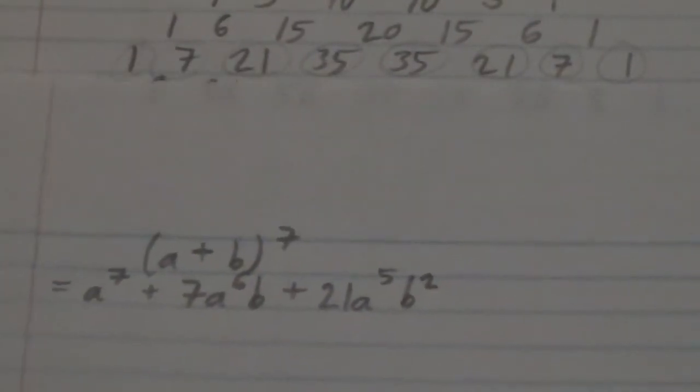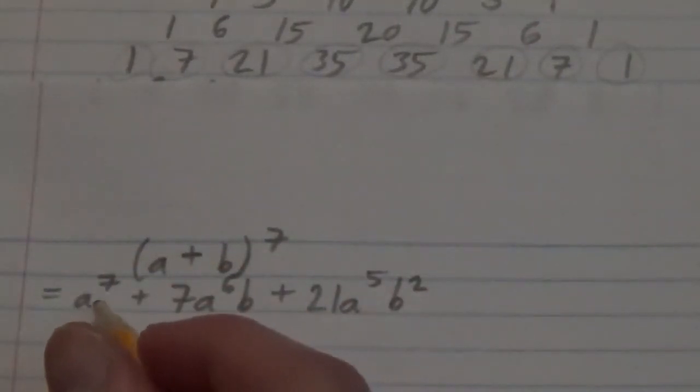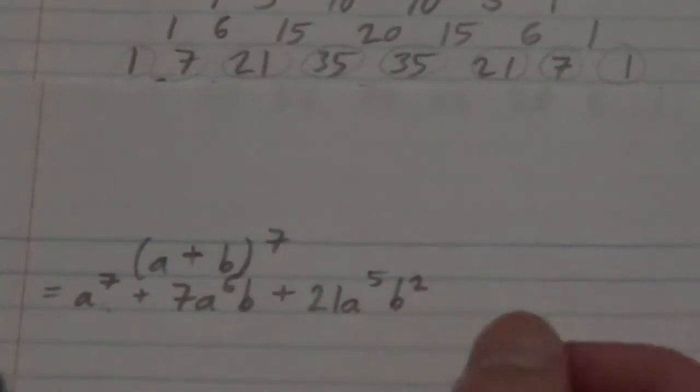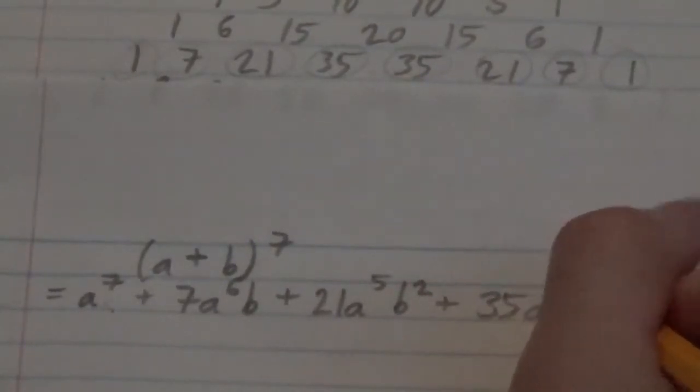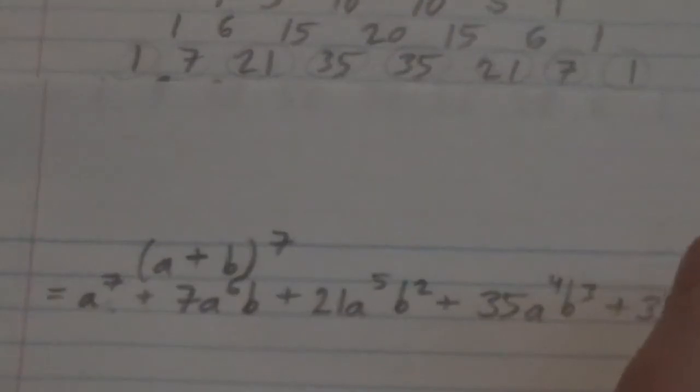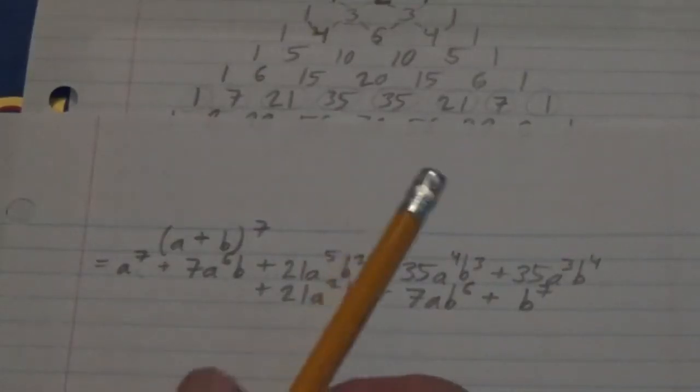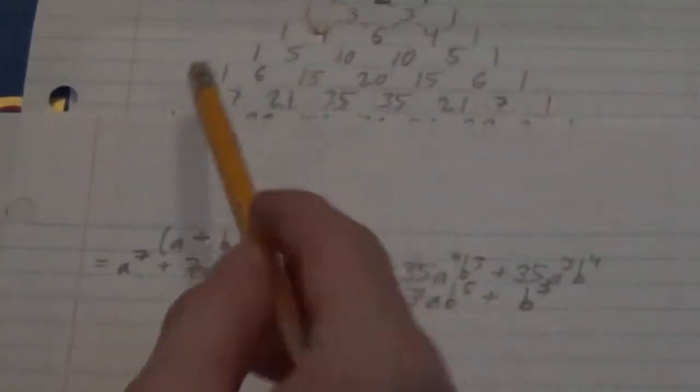21 a to the fifth times b squared, and we continue in this fashion, we actually continue this pattern, where the coefficient of a decreases until it gets to zero, and b, from the first term onward, the exponent of b is going zero, one, two, all the way up to, eventually, it's going to be seven. But for this one, we'd get 35 a to the fourth b cubed, and then we'd get 35 a to the third b to the fourth, and we can still even continue in this fashion. So clearly, each of the numbers in that row of Pascal's Triangle is being used in the polynomial expansion.